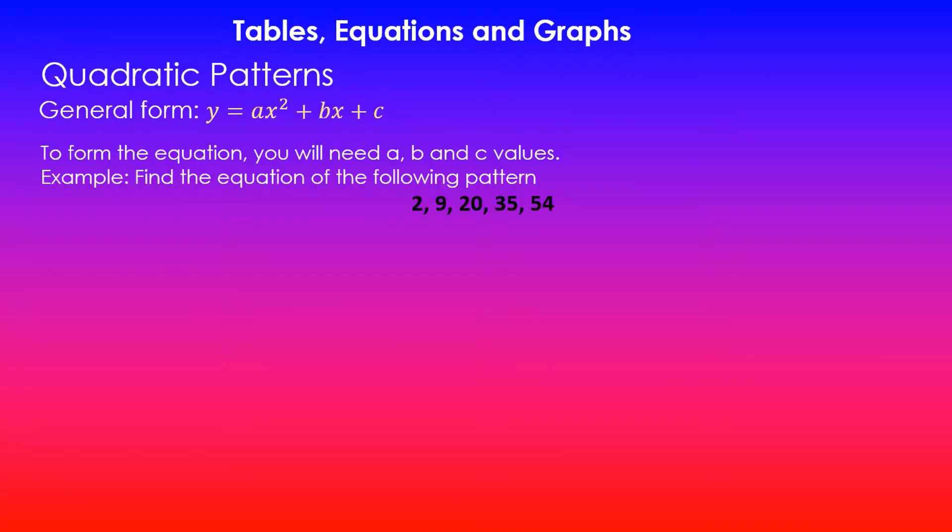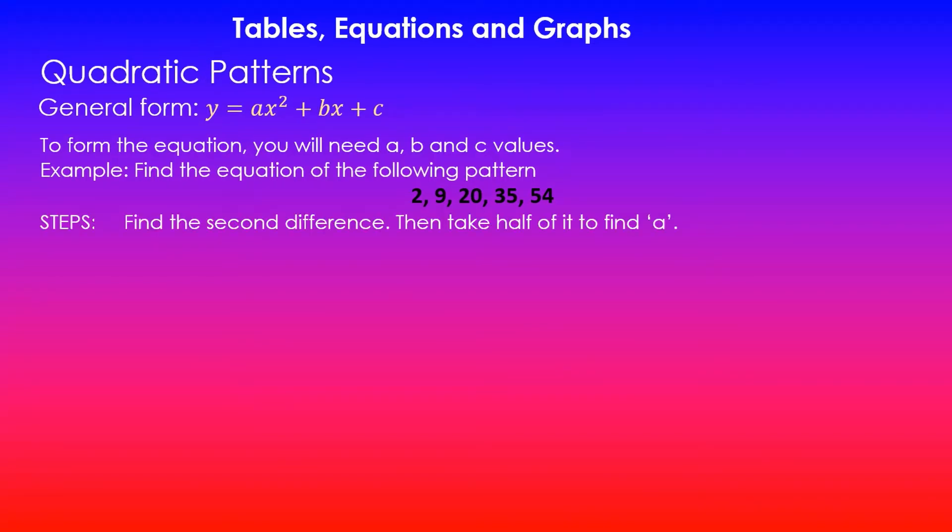Let's look at the first example. It says find the equation of the following pattern: 2, 9, 20, 35, and 54. We'll look at some of the steps you will need to follow. In this case you will need to find the second difference because this is a quadratic pattern. The trick here is you take half of that second difference and that will give you the a value, which will be the coefficient of x squared. This will be the quadratic term.